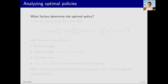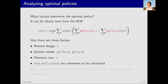First, we need to answer an important question: what factors determine the optimal policy? If we don't understand the Bellman optimality equation, it is difficult to answer this question. However, with the Bellman optimality equation, it is easy to answer. This is the Bellman optimality equation. We need to solve these unknown quantities, which are in black, corresponding to the optimal policy and optimal state value.